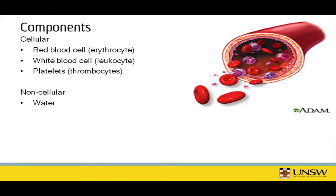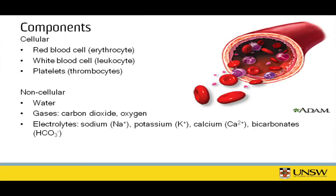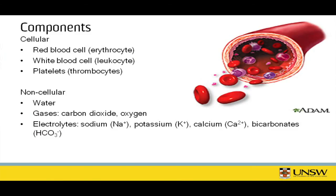Within the non-cellular components, we have water and important gases such as carbon dioxide and oxygen, which are transported within the blood — carbon dioxide to be ventilated out of the body and oxygen to be transported around the body. We also have electrolytes such as sodium, potassium, calcium, and bicarbonates, which are very important for physiological homeostasis. For example, sodium and potassium are required at proper concentrations for the heart to beat at a regular rate, and bicarbonates are important for regulating the body's pH. There are also energy sources transported via the bloodstream — fat, protein, and carbohydrates.